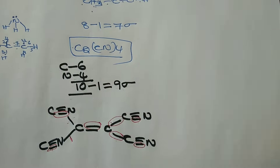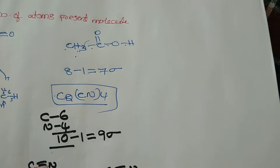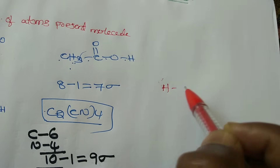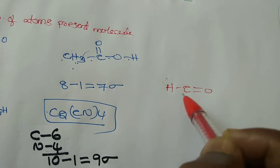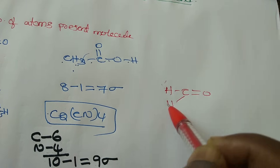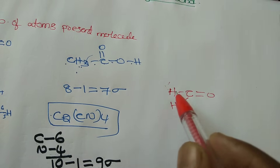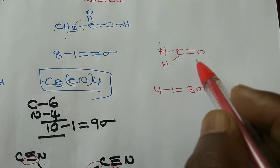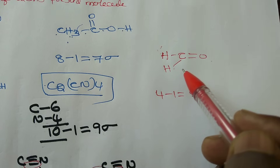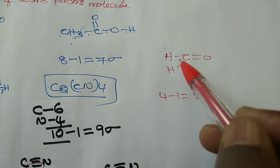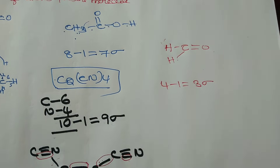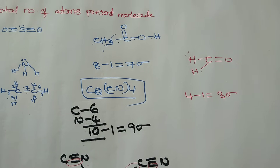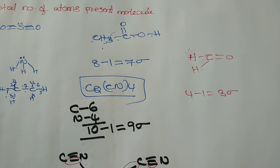Next, I want to know the sigma bonds in formaldehyde. How many atoms? One, two, three, four atoms. Four minus one equals three sigma bonds. Drawing the structure also confirms: one, two, three — three sigma bonds. This is a very easy method. If you like this video, please subscribe to my channel.